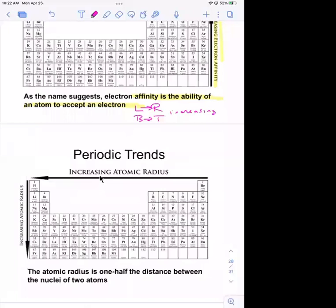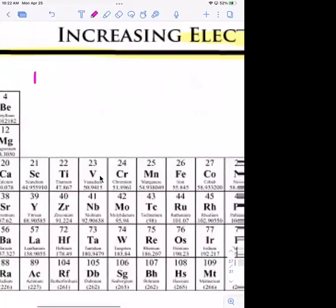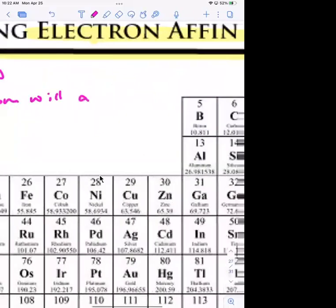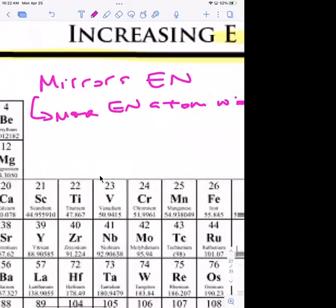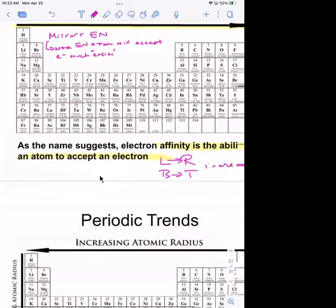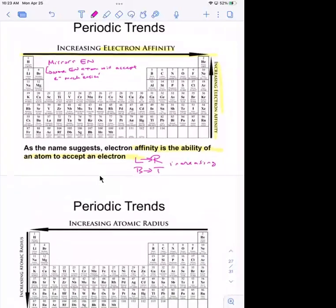More electronegative atoms are more apt to accept electrons than less electronegative atoms. It's easier to accept a pair of electrons for an atom that's already electronegative. That's why you see the trend of increasing from left to right and increasing from bottom to top.